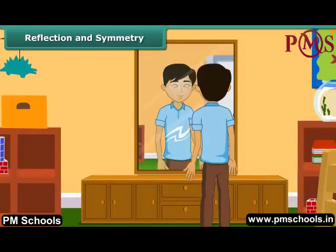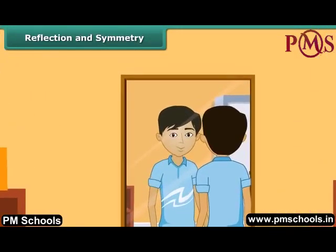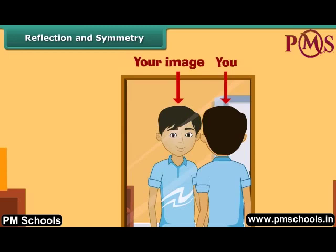Students, you must have noticed that when you see yourself in front of a mirror, you and your image are identical. The image is the reflection of the object along the mirror line. Notice that there is no change in the lengths and angles. However, in the image, the left portion of the object becomes right, whereas the right part of the object turns left in the image.